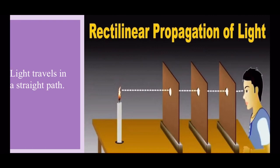Now, we are able to see the flame of the candle. It shows that the light rays reaching our eyes travel in a straight path. If we shift one of the cardboards, we will not be able to see the candle flame because light travels in a straight line only. This property is the rectilinear propagation of light.